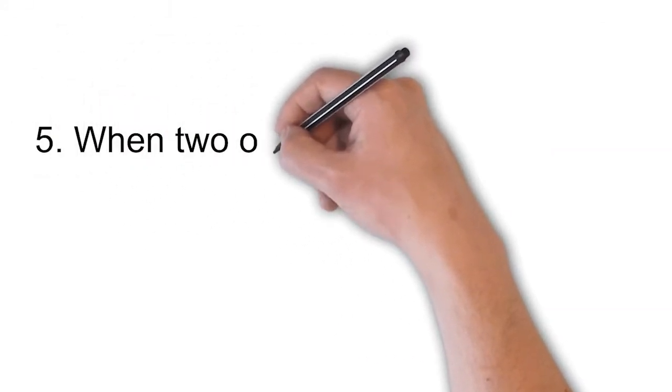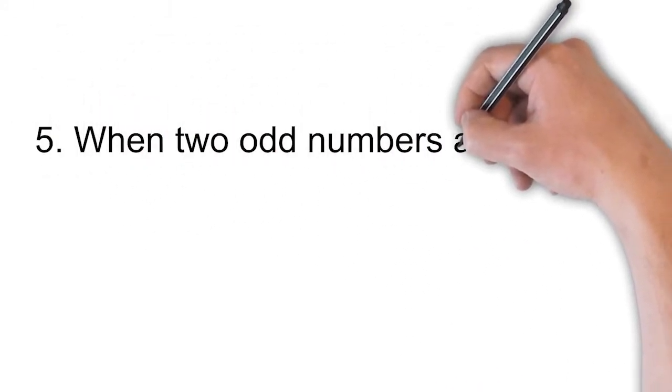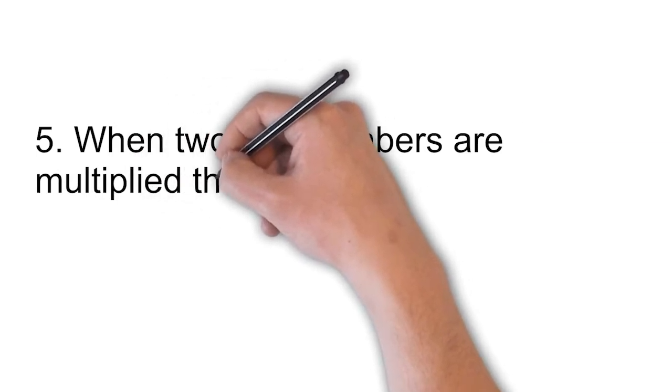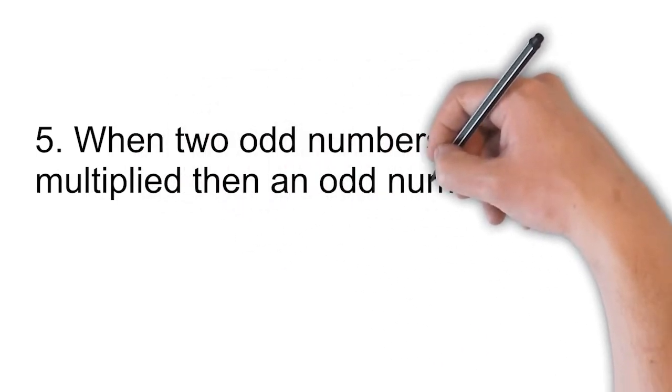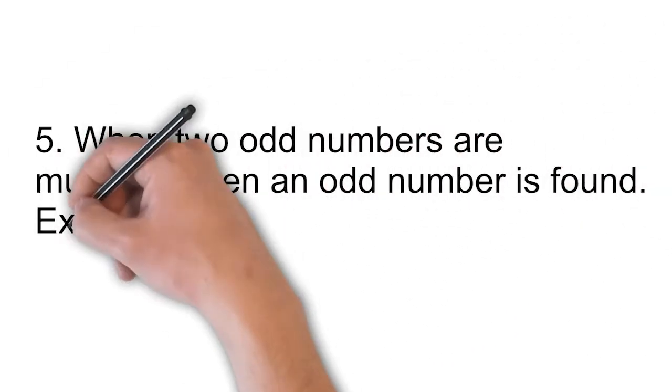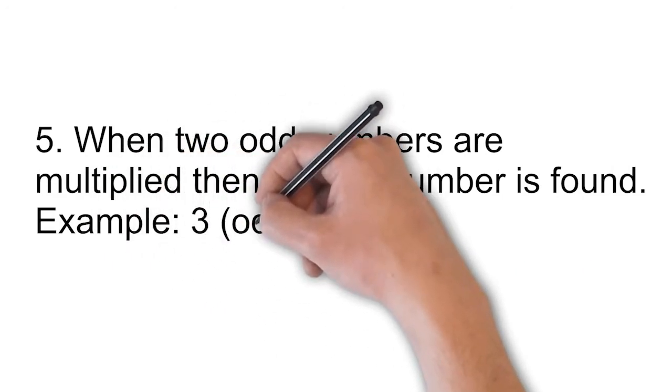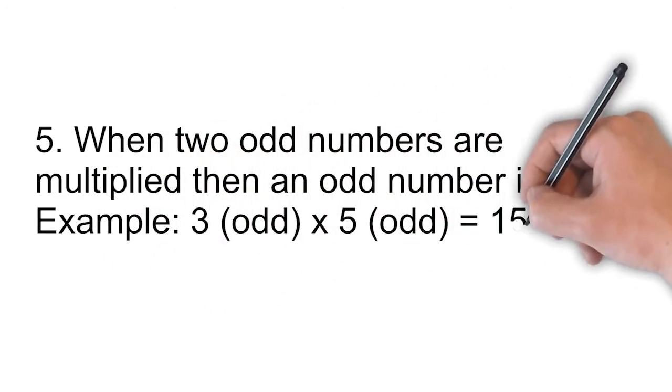When two odd numbers are multiplied then an odd number is found. Example: 3 times 5 is equal to 15 which is an odd number.